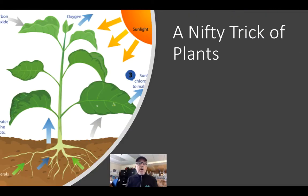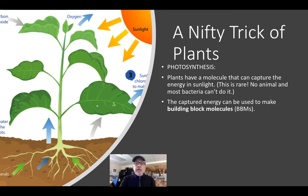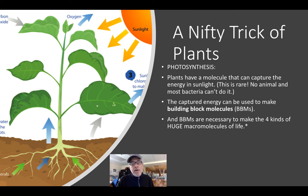Since plants are the most important autotroph for current ecosystems, we need to talk about their key trick: photosynthesis. Plants have a molecule that can capture energy in sunlight, puts it into the molecule — a really rare capability that no animal and most bacteria cannot do. The captured energy is then used to make what I call the building block molecules, or BBMs. Learn that term because I'll be using it over and over. The BBMs are necessary to make the four kinds of macromolecules of life — ask yourself what those four macromolecules are.